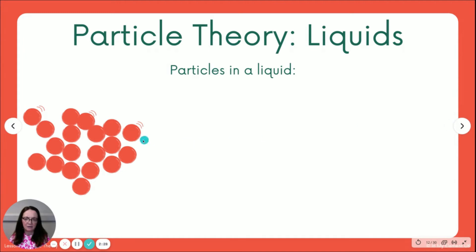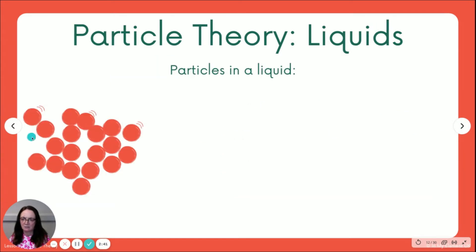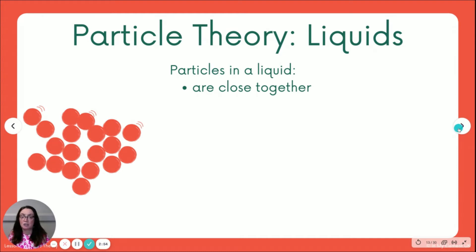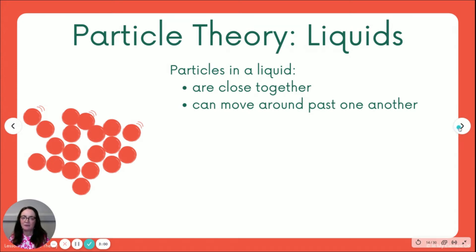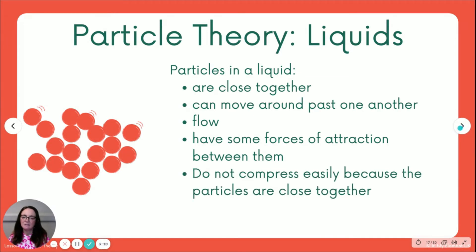Now look at the liquid. The arrangement's different — it's not in regular lines. Look at the solid: it has a very regular arrangement. Moving on to the liquid, there are curved lines here representing movement. The particles in a liquid are close together and still touching. When you're asked to draw these, you show the majority of them are touching. They can move around past one another, which enables the flow of the liquid. There are some forces of attraction between these particles, and they do not compress easily because the particles are close together.